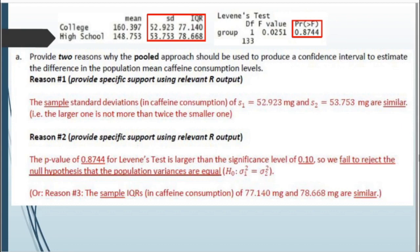A third reason is Levene's test — a hypothesis test specifically for checking the equal variance assumption. The null hypothesis for Levene's test is that the two population variances are equal. The p-value from Levene's test output was 0.87, which is larger than the significance level of 0.1 always used for Levene's test. Since we fail to reject that null hypothesis, we can assume the population variances are equal, justifying the pooled approach.